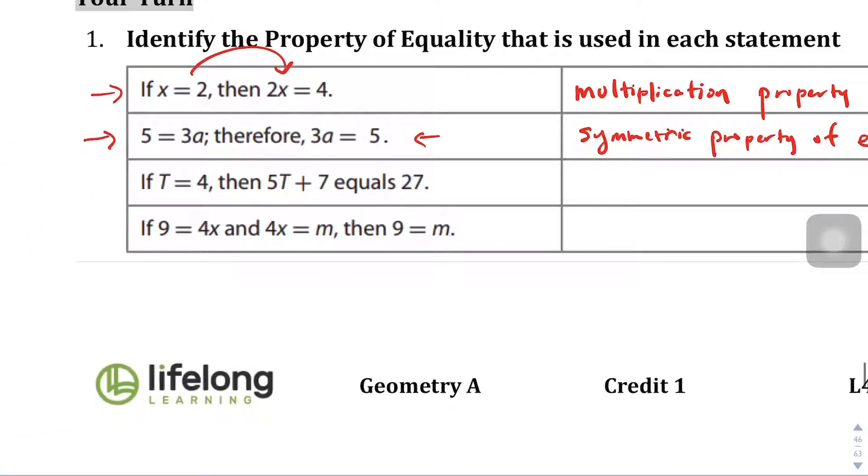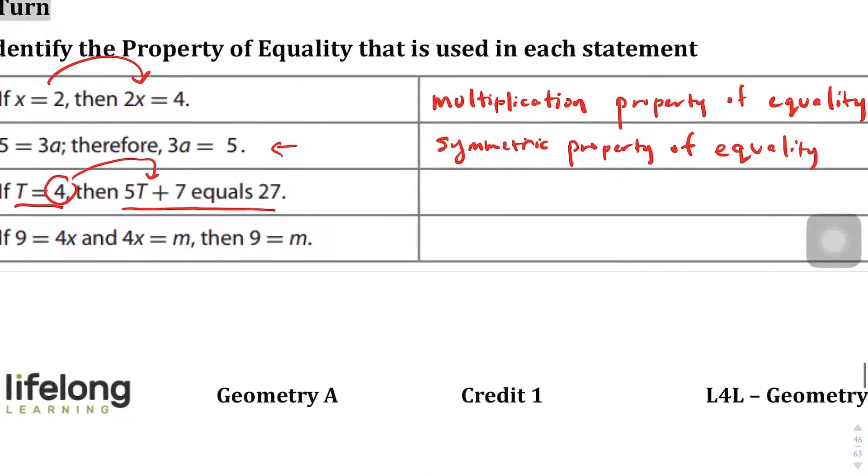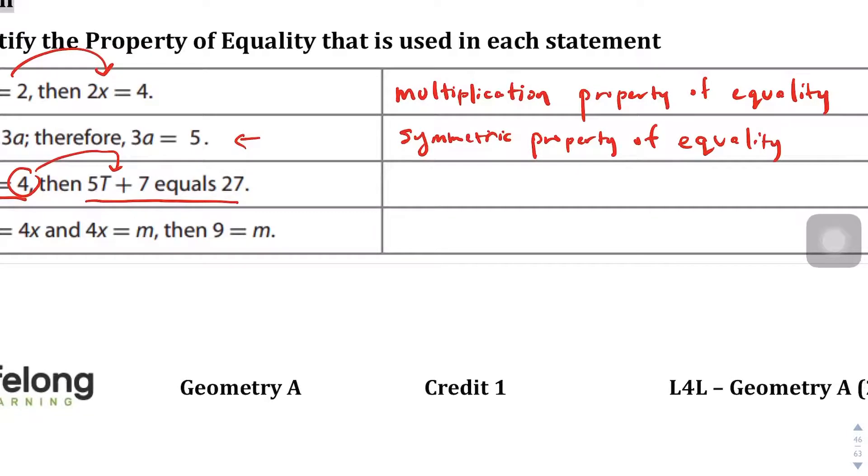And then here, t equals 4, 5t plus 7 equals 27. It looks like what happened was you took that value of t and you plugged it in, and when you plug it in like that, it's called substitution. So this is the substitution property of equality.